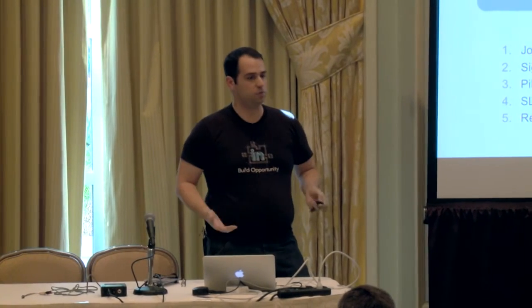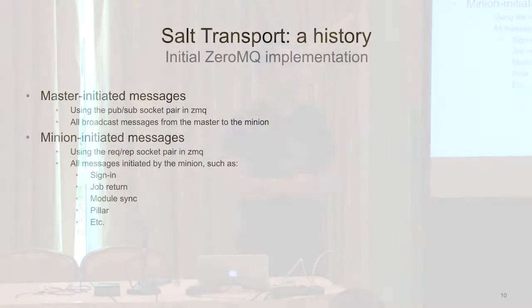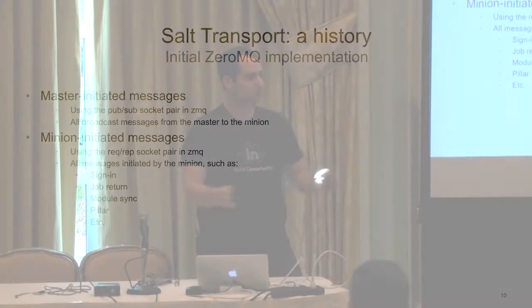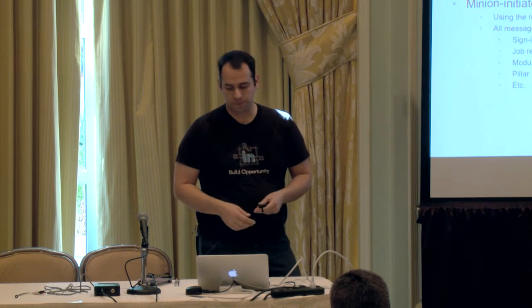You can break up the transport layer in Salt into basically two categories of messages. There's master-initiated messages, which are just the published stuff — where I publish to some number of places, preferably with some filtering so we don't send everything everywhere. Then there are minion-initiated requests, which are the request-reply things for getting a pillar, signing in, those sorts of things.